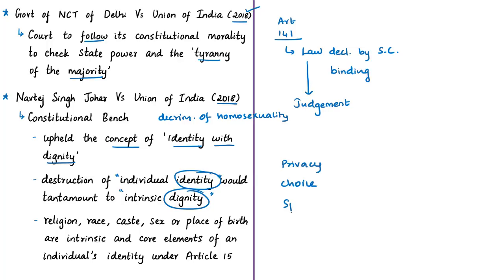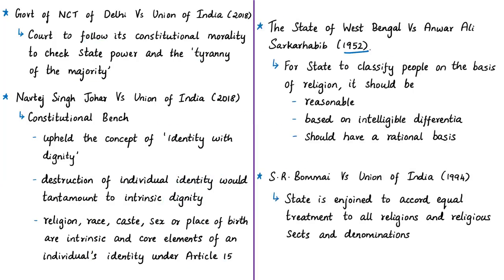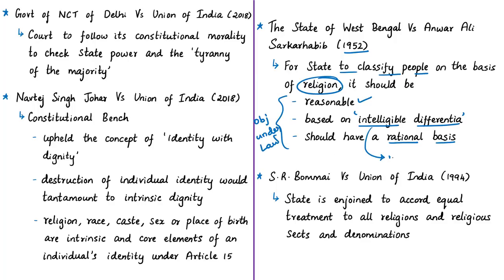The court also mentioned what are the intrinsic and core elements of identity of an individual under Article 15: religion, race, caste, sex, and place of birth. In the year 1952, in the case of State of West Bengal versus Anwar Ali Sarkar Habib, the Supreme Court mentioned that if the state ventures to classify people on the basis of religion, it should be reasonable, based on intelligible differentia, and have a rational basis in line with the objective sought to be achieved. One component of intelligible differentia is that there should not be inequality of treatment — one cannot be differentiated on the basis of religion by violating the right to equality.